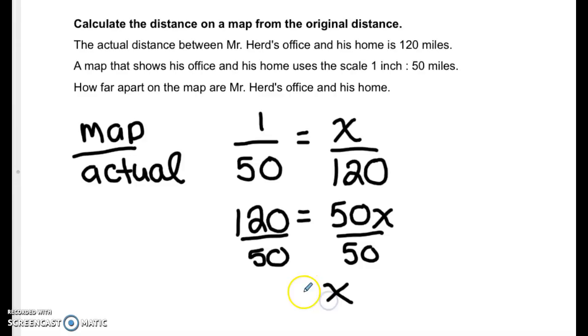We get x equals 2.4. So on the map Mr. Hurd's office and his home are 2.4 inches apart.